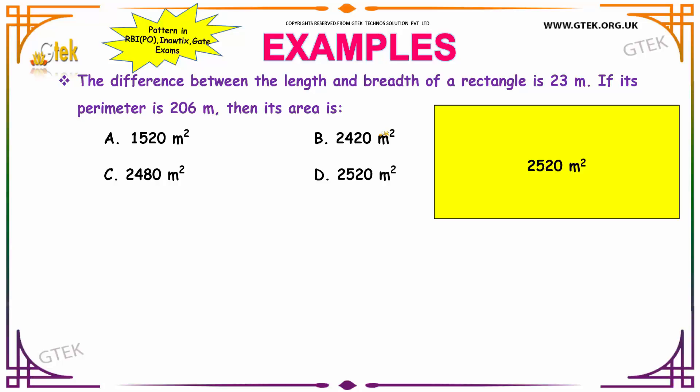Let us look into the question. It is given that the difference between the length and breadth of the rectangle is 23 meters. If its perimeter is 206 meters, then what will be its area?